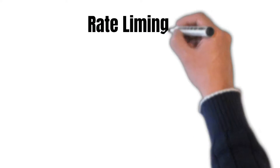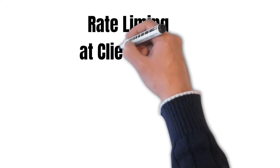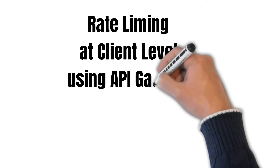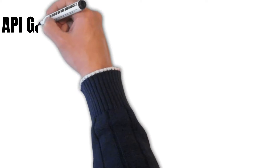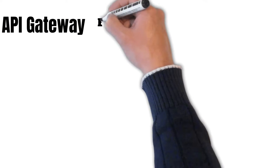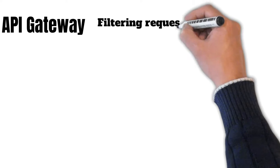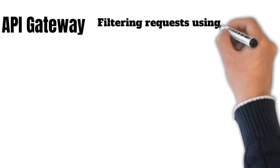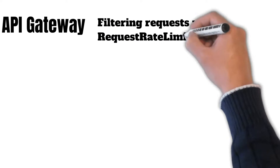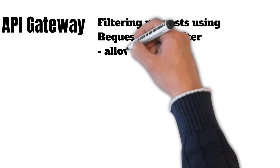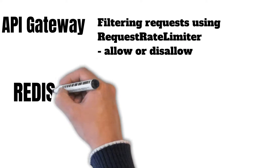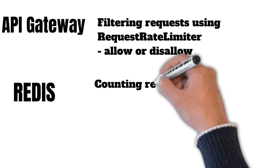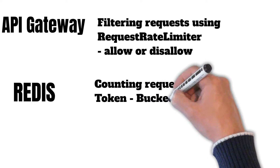In order to mitigate this, we use rate limiting at a client level using an API gateway and Redis. We use an API gateway to filter requests using the request rate limiter filter, which decides to allow or disallow a request. And we use Redis for counting requests based on the token bucket algorithm.